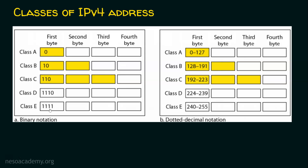If the first four bits of the first octet are all ones (1,1,1,1), then it is Class E. So when represented in binary, we need to examine the leading bit values to determine whether the IP address belongs to Class A, B, C, D, or E.